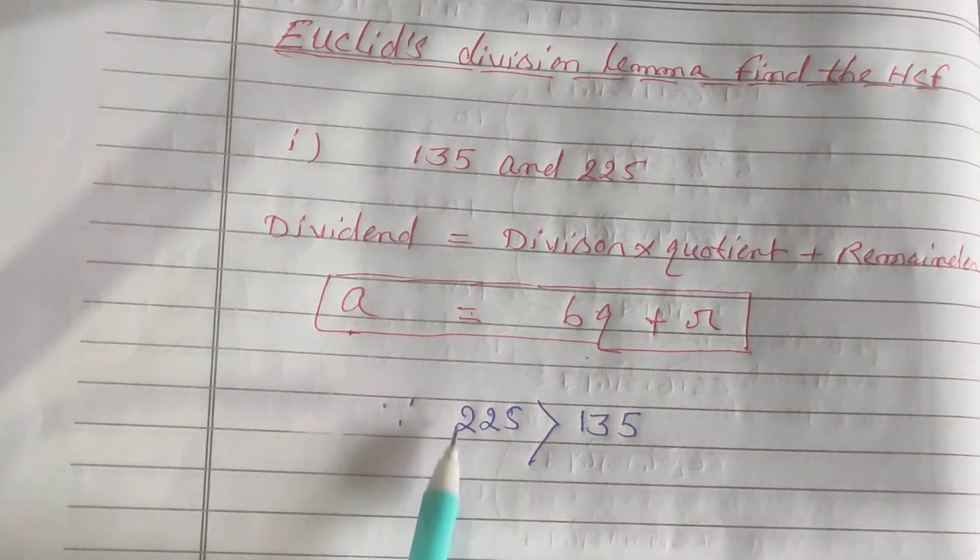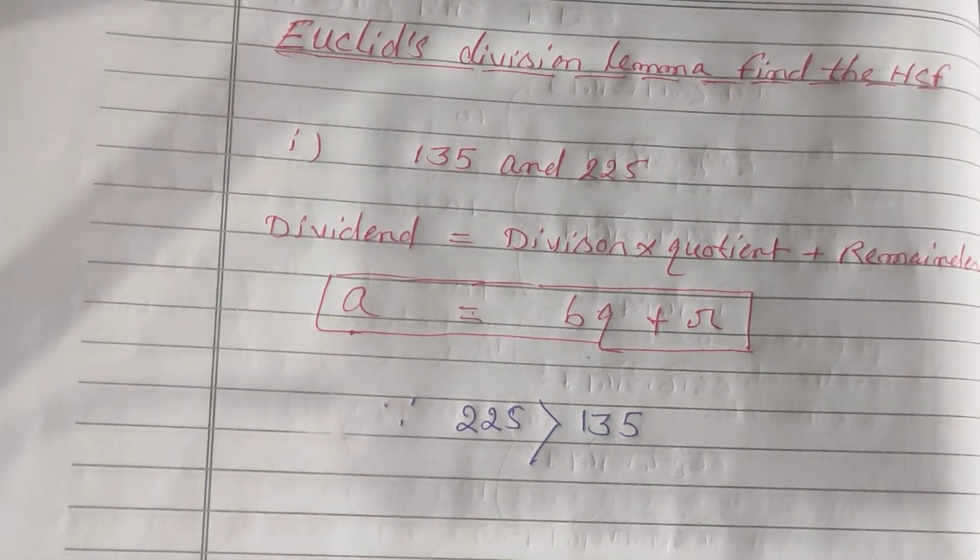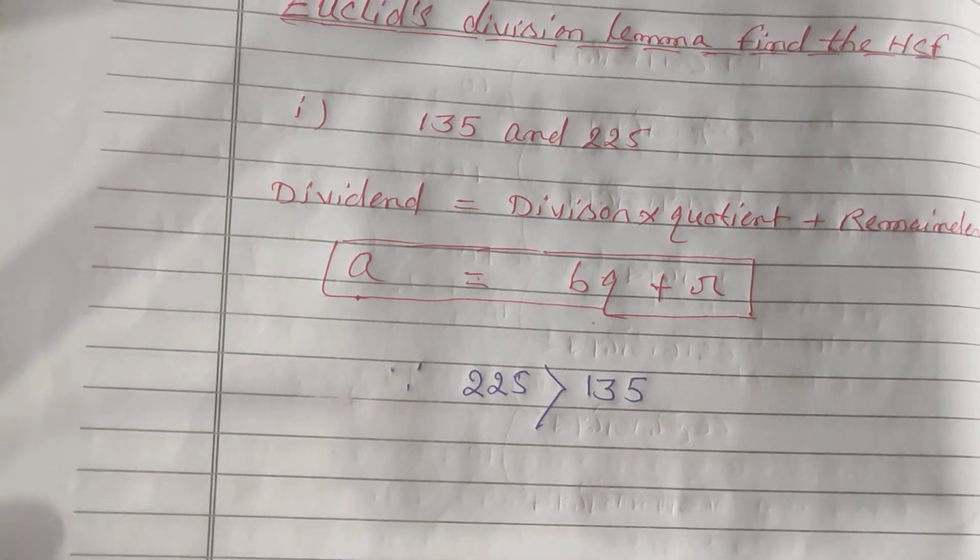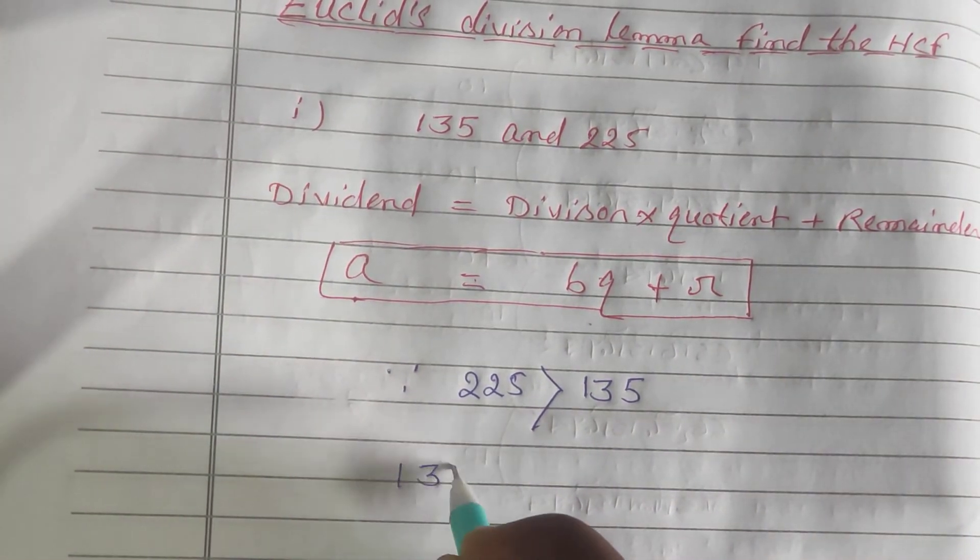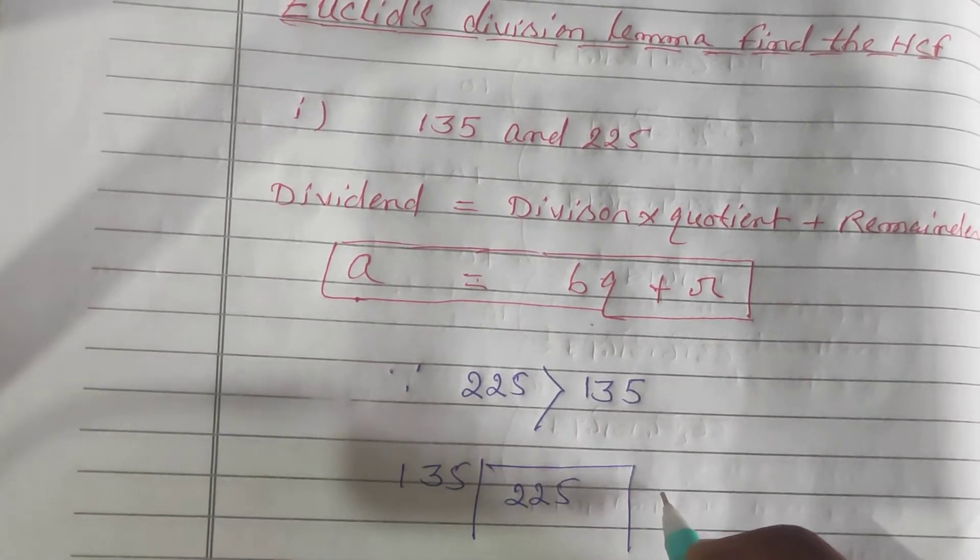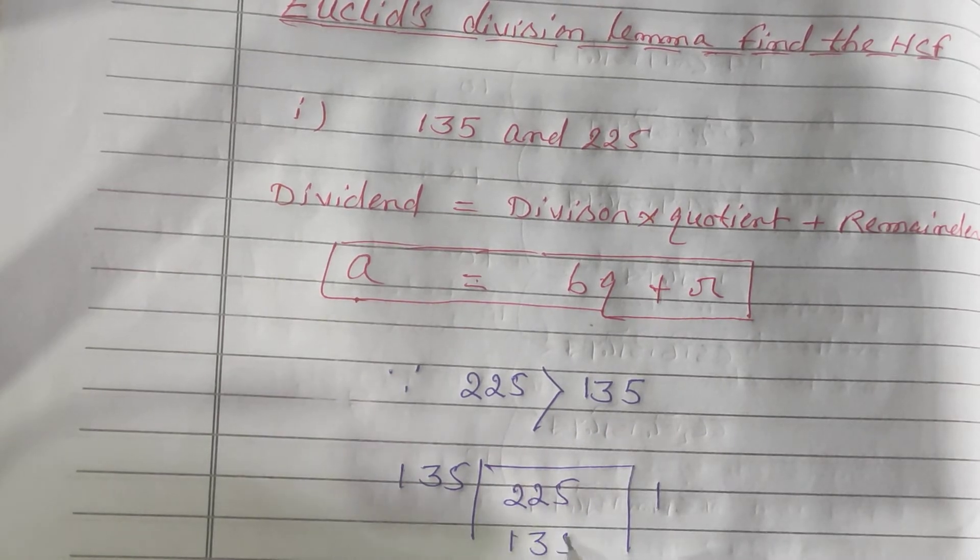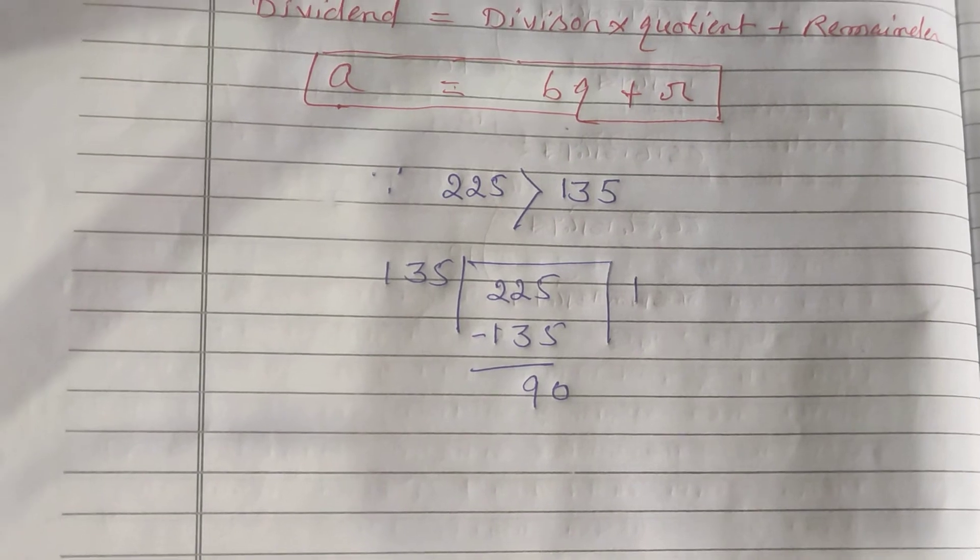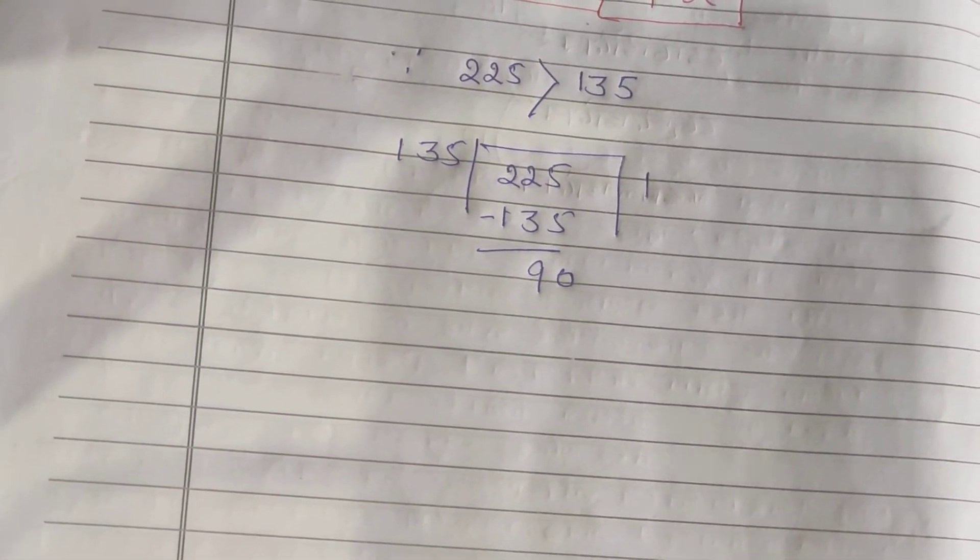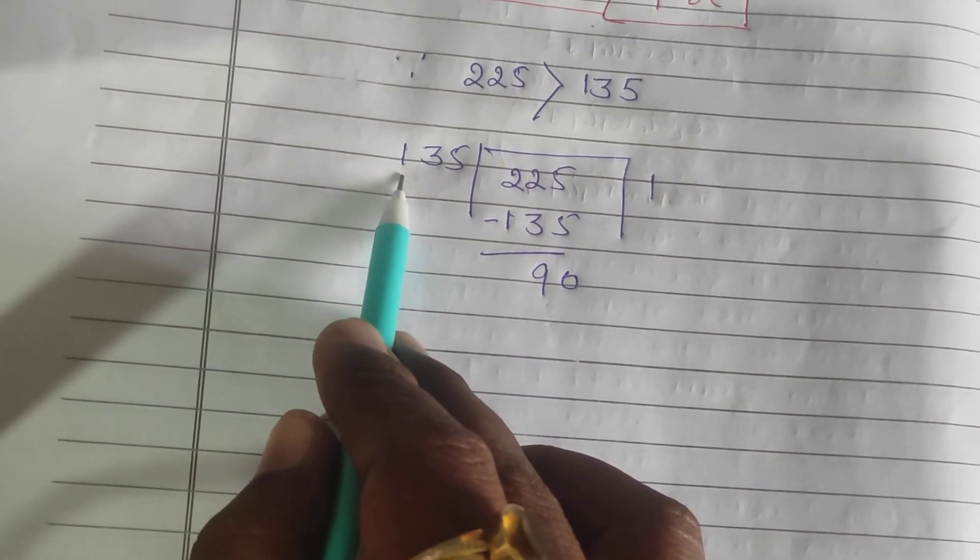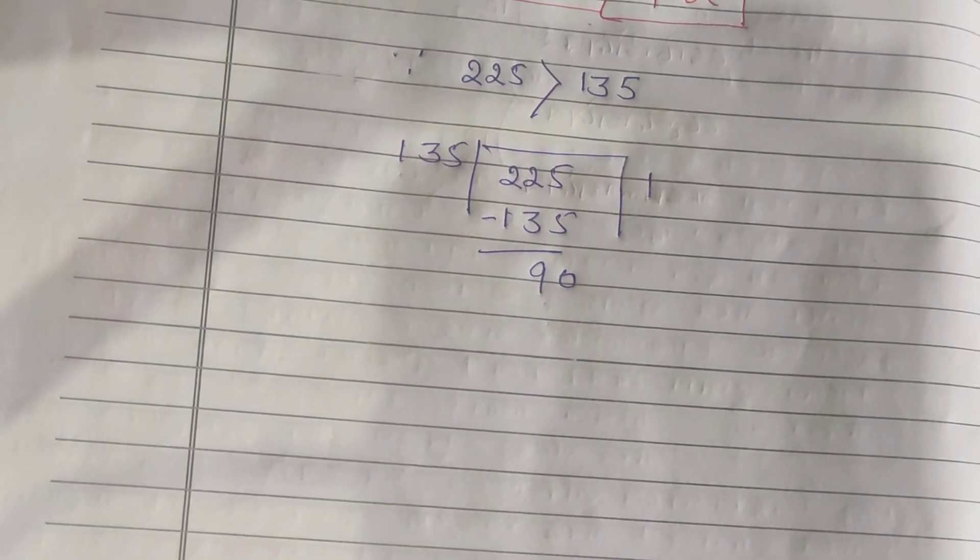We will take 225 as dividend and 135 as divisor and proceed to divide. If we divide 225 by 135, it will go one time: 135. If we subtract, we get 90 as the remainder. Once we get a remainder, we have to divide the divisor by the remainder in the next step. We follow these steps till our remainder is 0.